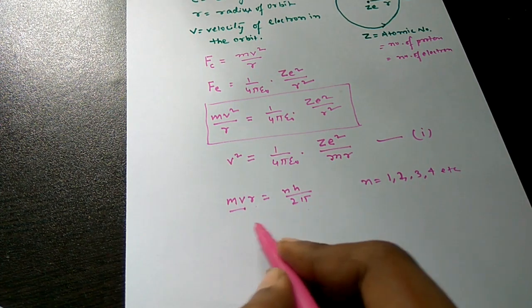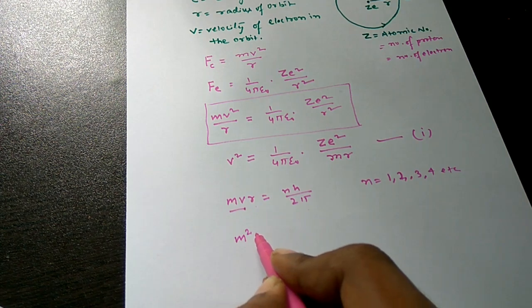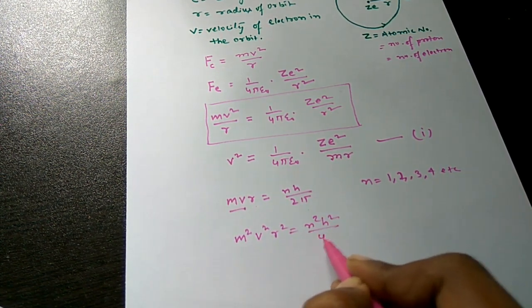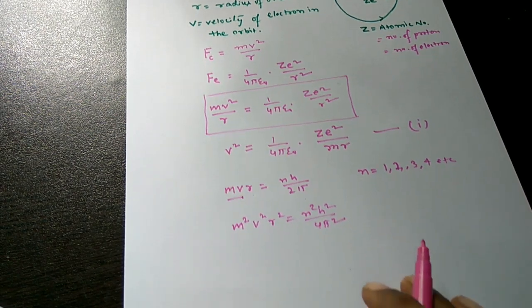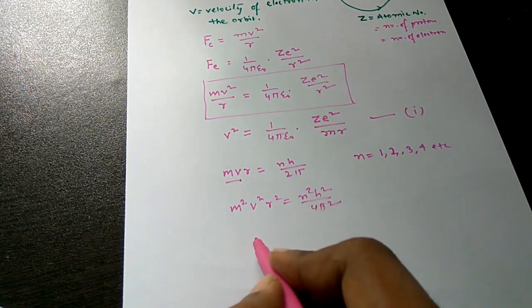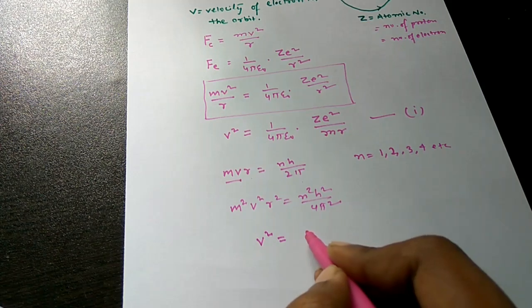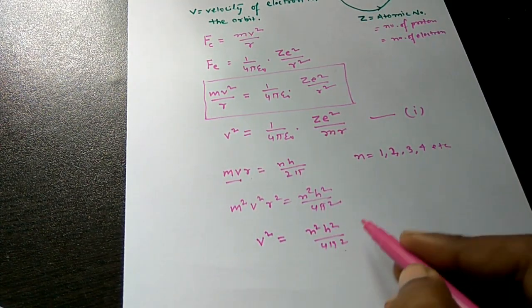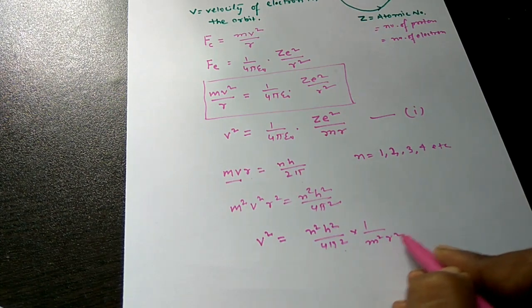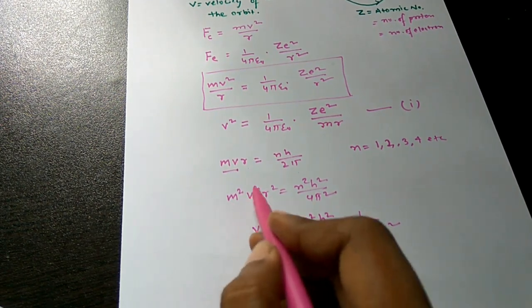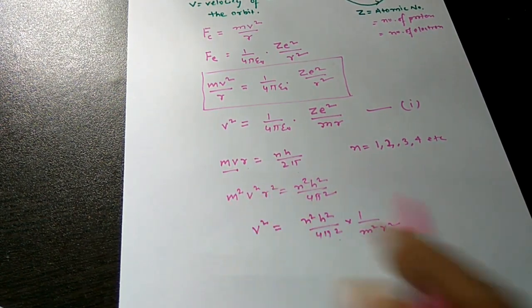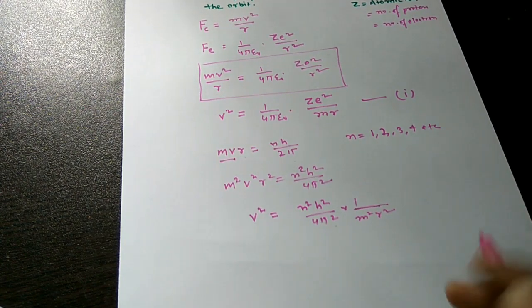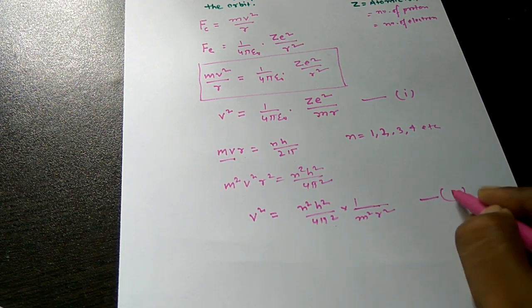Squaring both sides of MVR = nh/2π, we get M²V²R² = n²h²/4π². Therefore, V² = n²h² / (4π² × M²R²). Let us call this Equation 2.